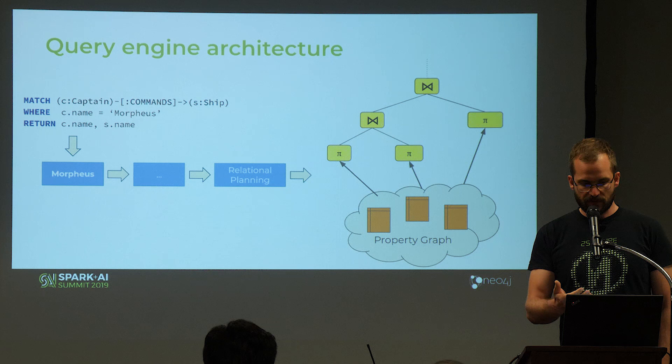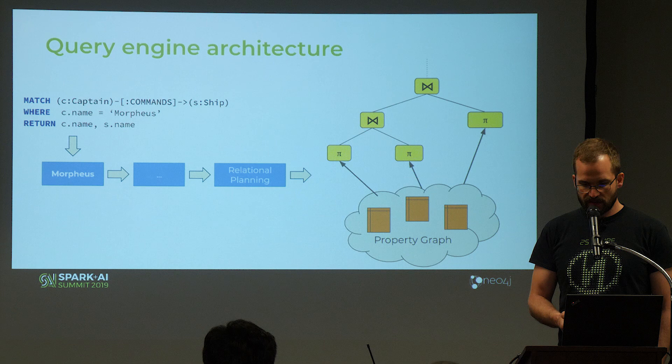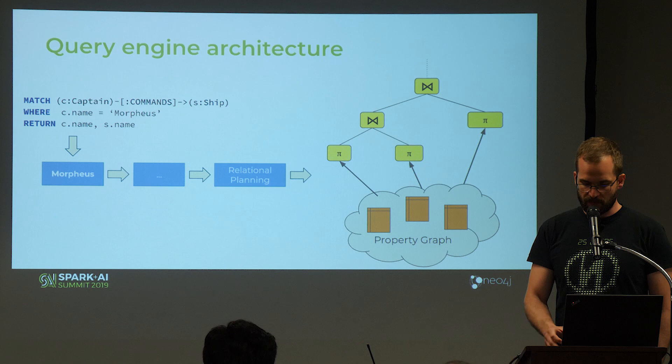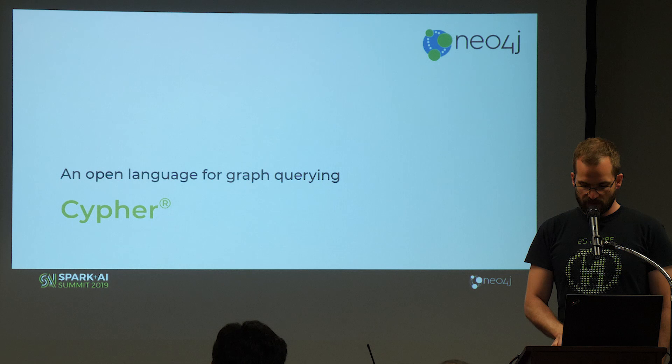To summarize the architecture: the query comes in, gets into Morpheus, we do relational planning which outputs a relational plan with some projections and joins, and this is basically executed on a property graph represented by tables backed by data frames in the Spark implementation.